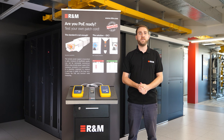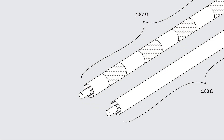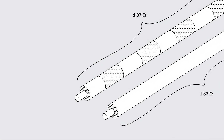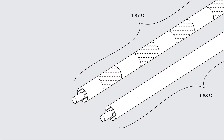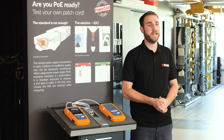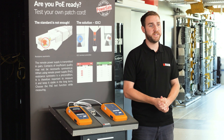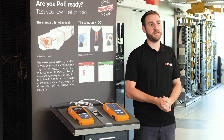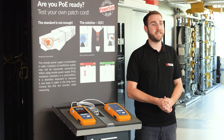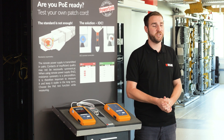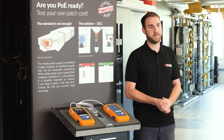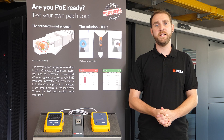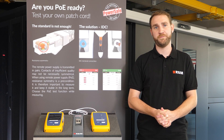Resistance unbalance is when the two conductors of a pair do not have the same resistance. DCRU can have various negative effects. The worst of it is magnetic saturation of the transformer in the active device. In this case, data transmission is no longer possible.